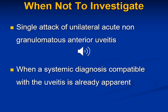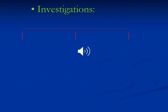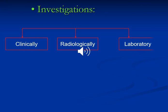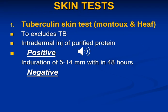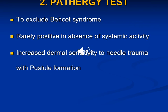When not to investigate: if it is a single attack of unilateral acute non-granulomatous anterior uveitis, or there is a non-systemic diagnosis. The investigations include clinical tests, radiological investigations, and laboratory investigations. The tuberculin test is used to exclude TB, with intradermal injection of purified protein derivative. The pathergy test is used to exclude Behçet's syndrome, and is rarely positive in the absence of systemic activity.